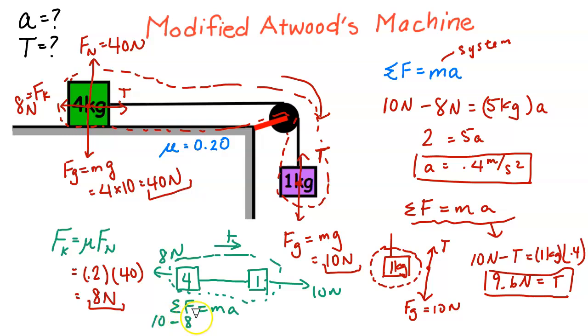Minus 8 is equal to your system mass, 4 plus 1 is 5 times A. And then solve for A. And you get the same answer that we got right here.